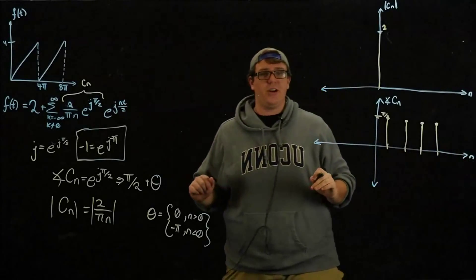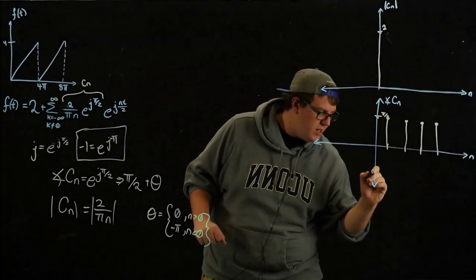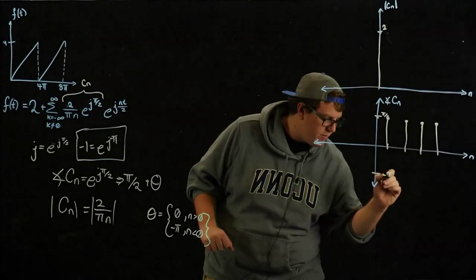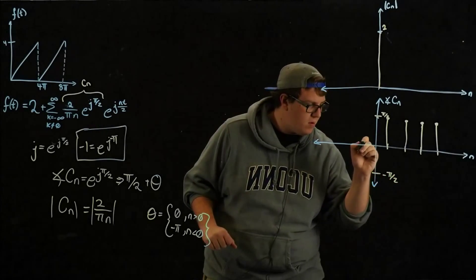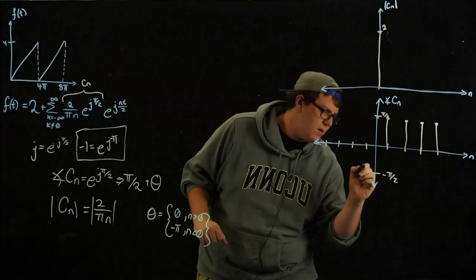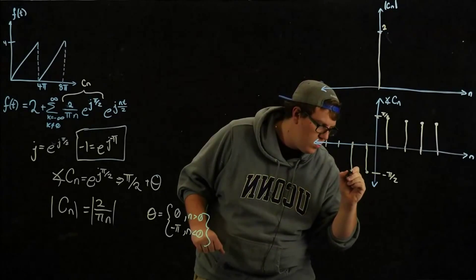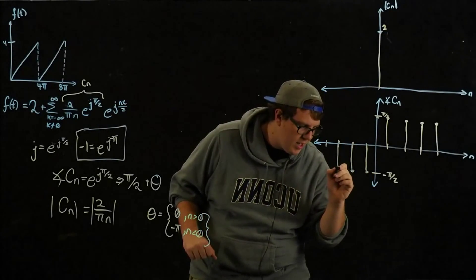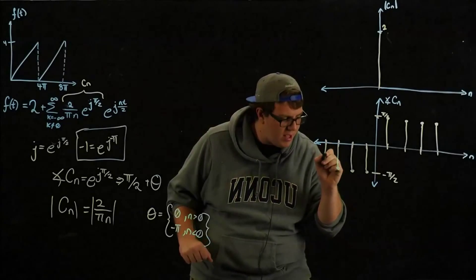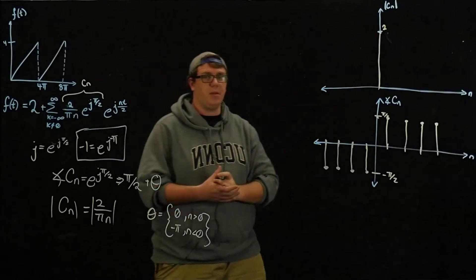Sorry if my graphs are less than straight. And then when we get to the negative side, we have a negative pi over 2 for negative 1, negative 2, negative 3, and negative 4. So we have these guys. And again, these are discrete valued plots because N only exists at integer values, so you have to do a stem plot.